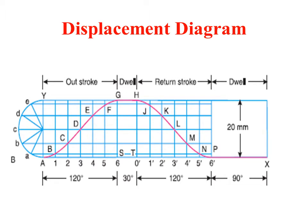So we need to draw the profile of the cam. Before that, we need to draw the displacement diagram. First, draw the horizontal line AX. This horizontal line represents the outstroke, dwell, return stroke, and dwell as mentioned in the problem. Mark 120 degrees for outstroke, 30 degrees for dwell, 120 degrees for return stroke, and 90 degrees for dwell, using a suitable scale. Then divide the outstroke and return stroke into an equal even number of parts — in this case, 6.